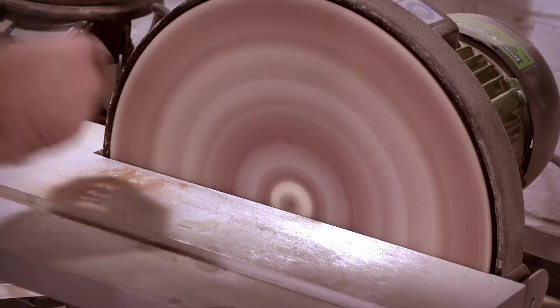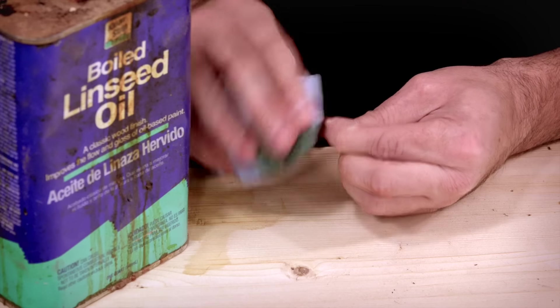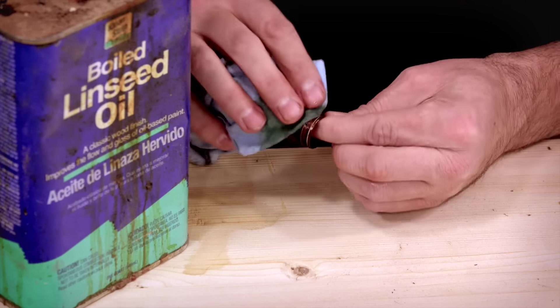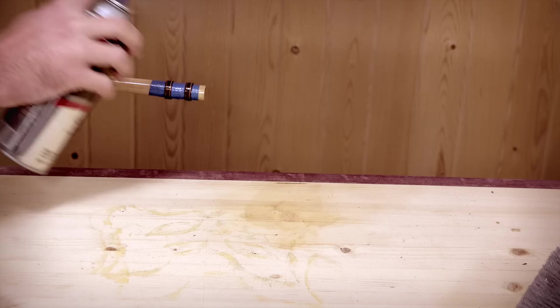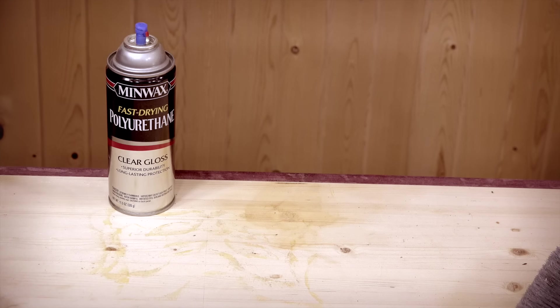I'll then sand down the edges, some final sanding on the inside, and add my finish. For mine, I'm using one coat of boiled linseed oil and eight to ten coats of spray polyurethane, waiting one day between each coat for proper curing.